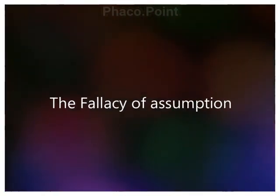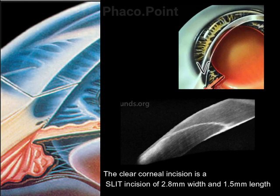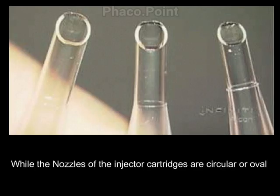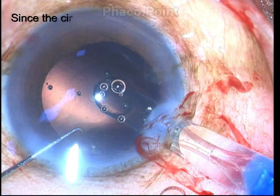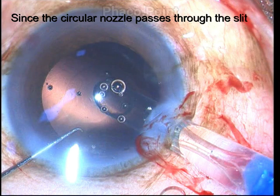This situation resulted because of certain fallacies in the assumption of what the ideal size of the injector cartridge should be. We all know that the clear corneal incision is a slit-like incision which is 2.8 mm wide and in most cases 1.5 mm in length, although this can vary from 1 to 2 mm. While the nozzle tip of the injector cartridge in most cases is circular or oval, it is an erroneous belief that the diameter of the nozzle tip should match the corneal incision, since the cylindrical device passes through a slit-like incision.